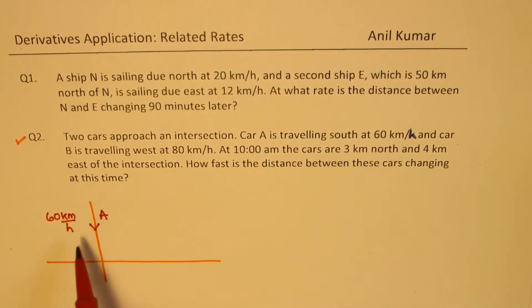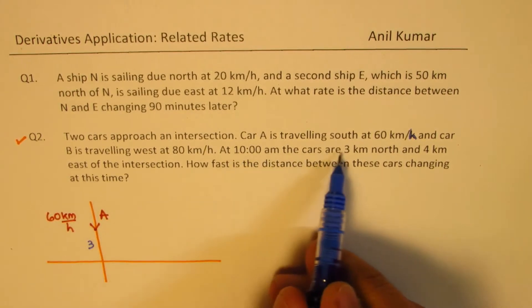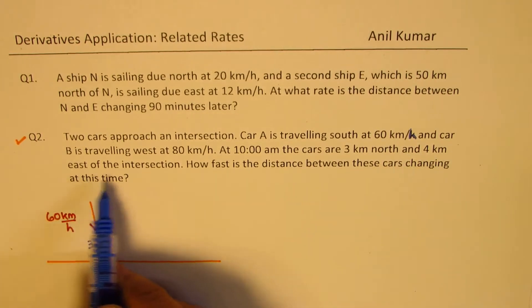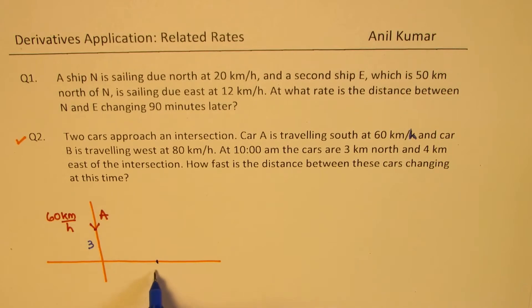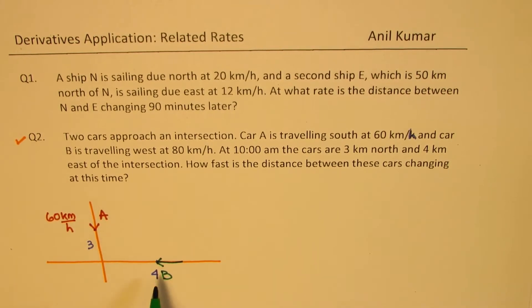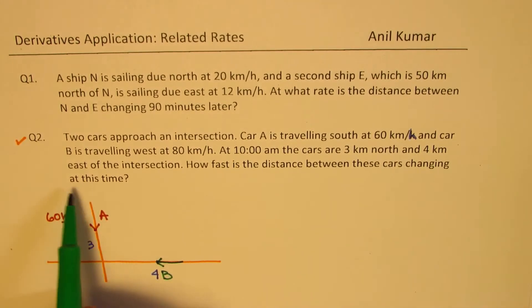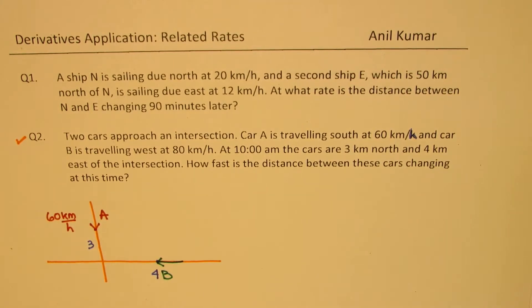At 10 a.m., the cars are 3 kilometers north — so this distance here is 3 kilometers — and 4 kilometers east of the intersection. So the other car is 4 kilometers on this side. That is the position of car B at this particular instance. We want to find how fast the distance between these two cars is changing at this time.